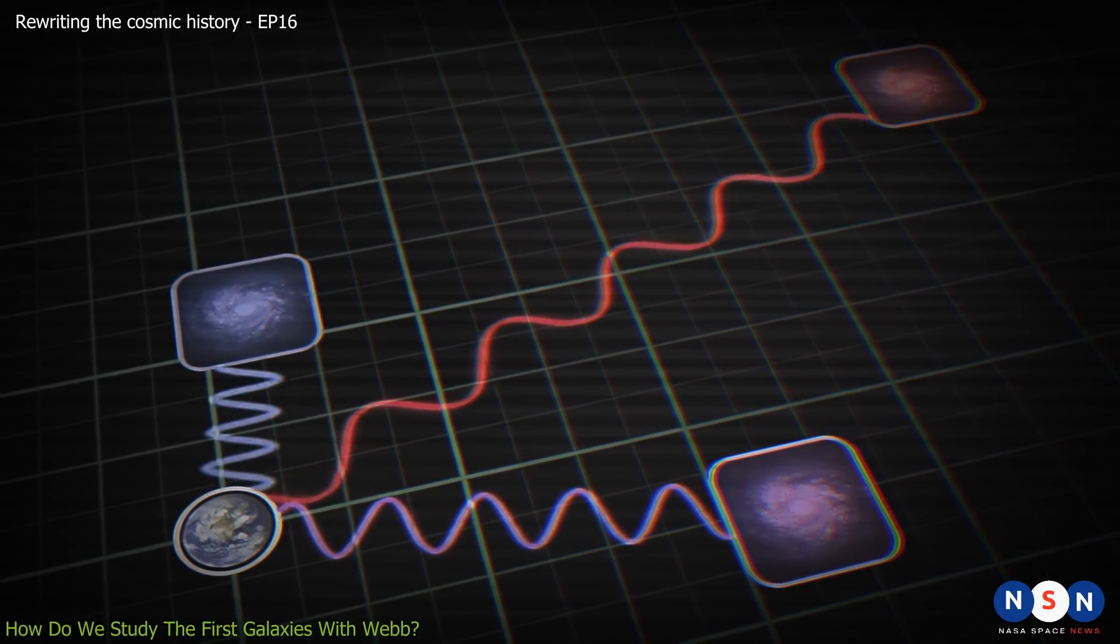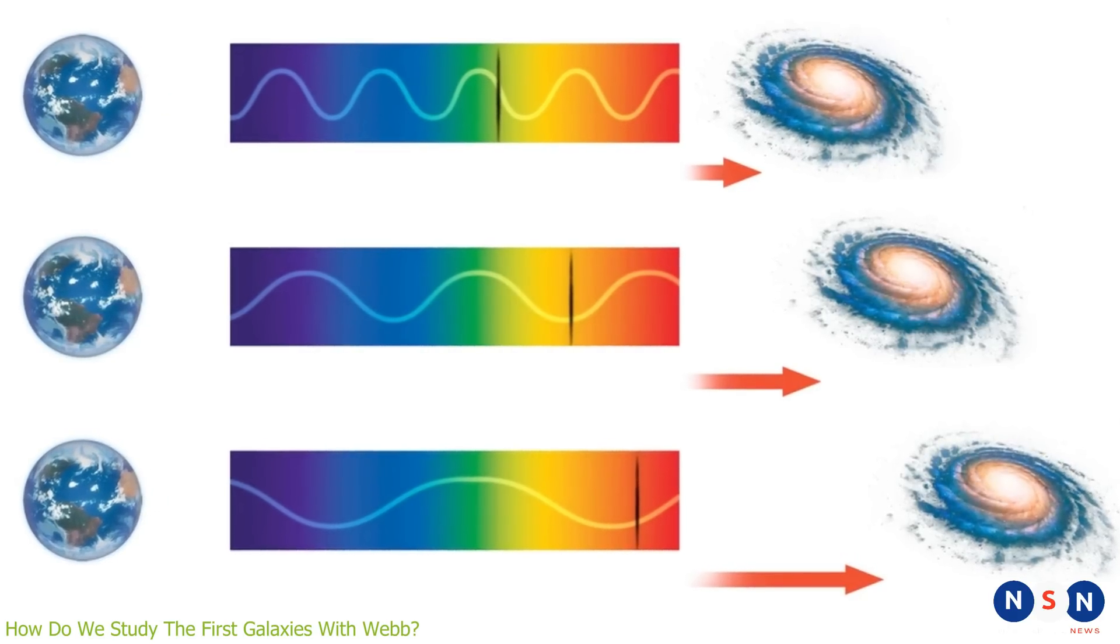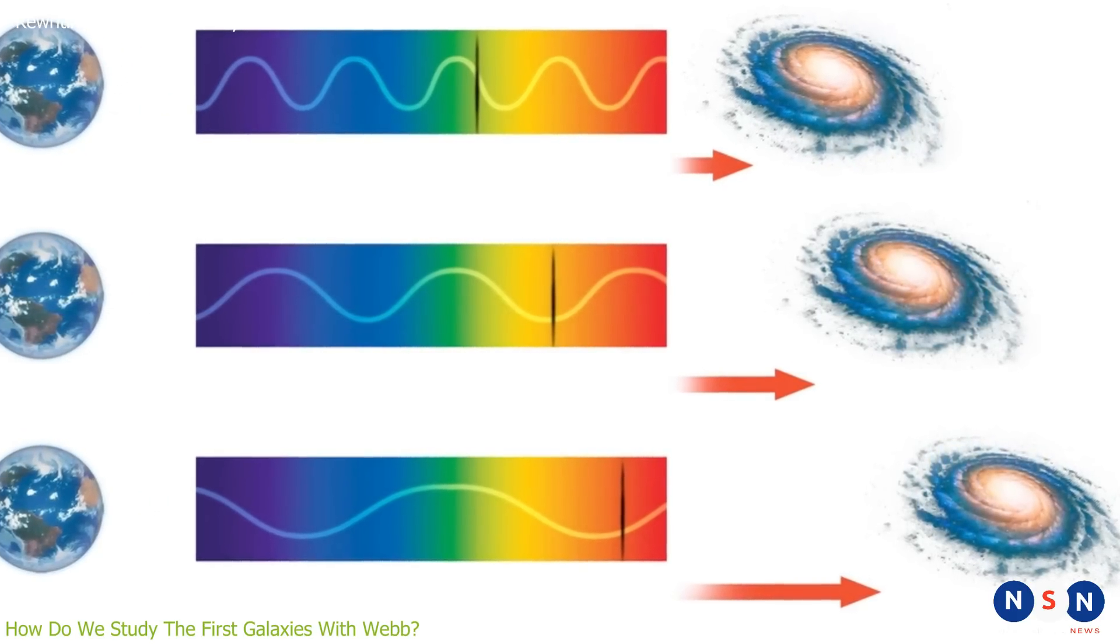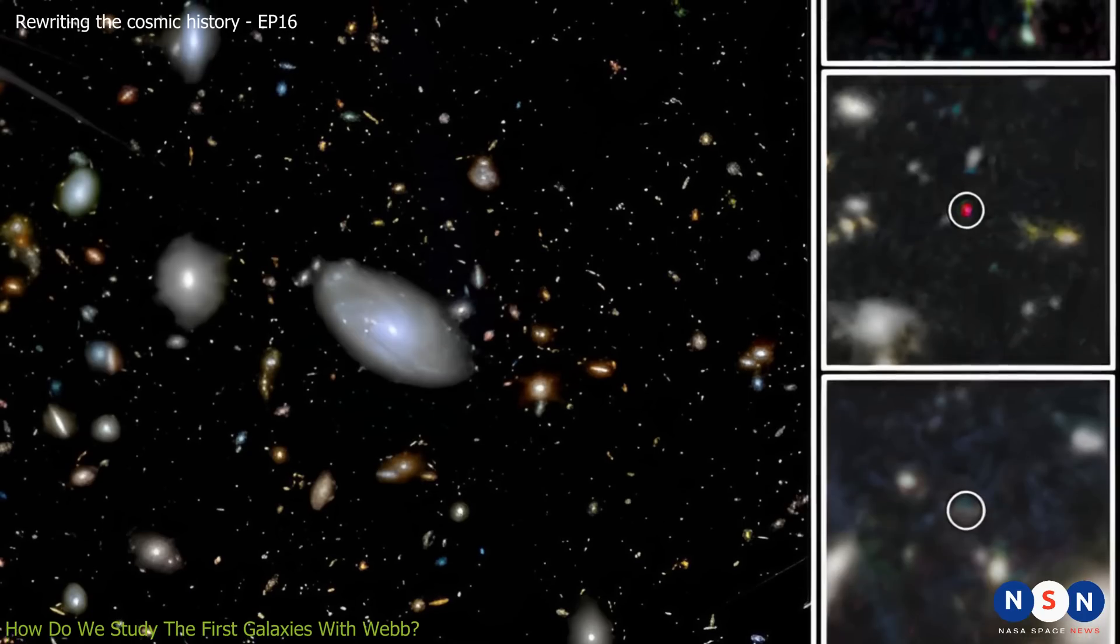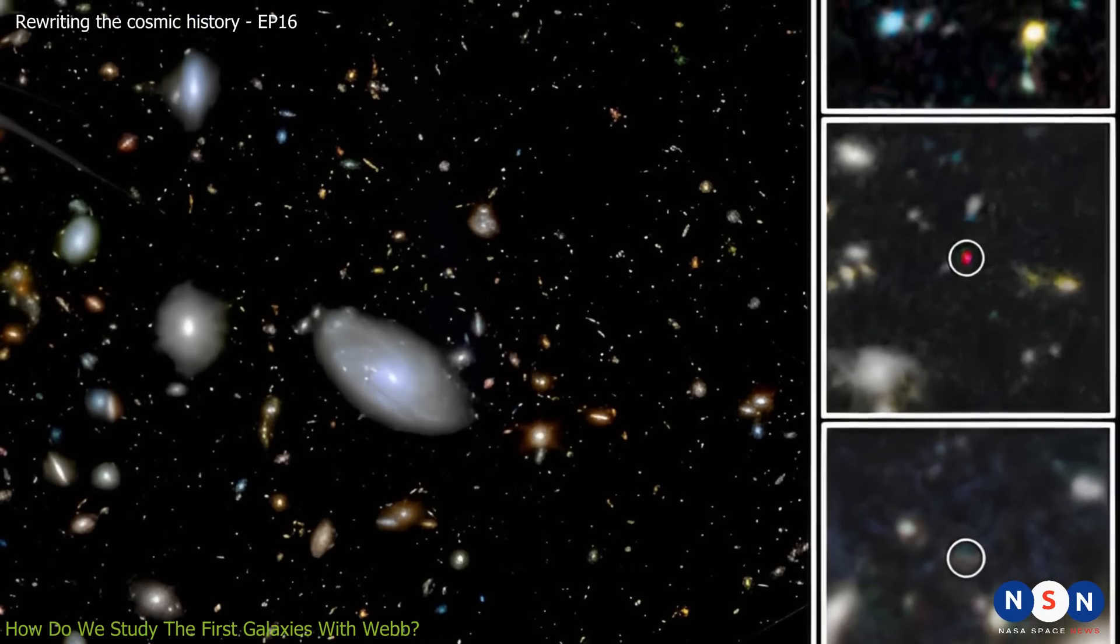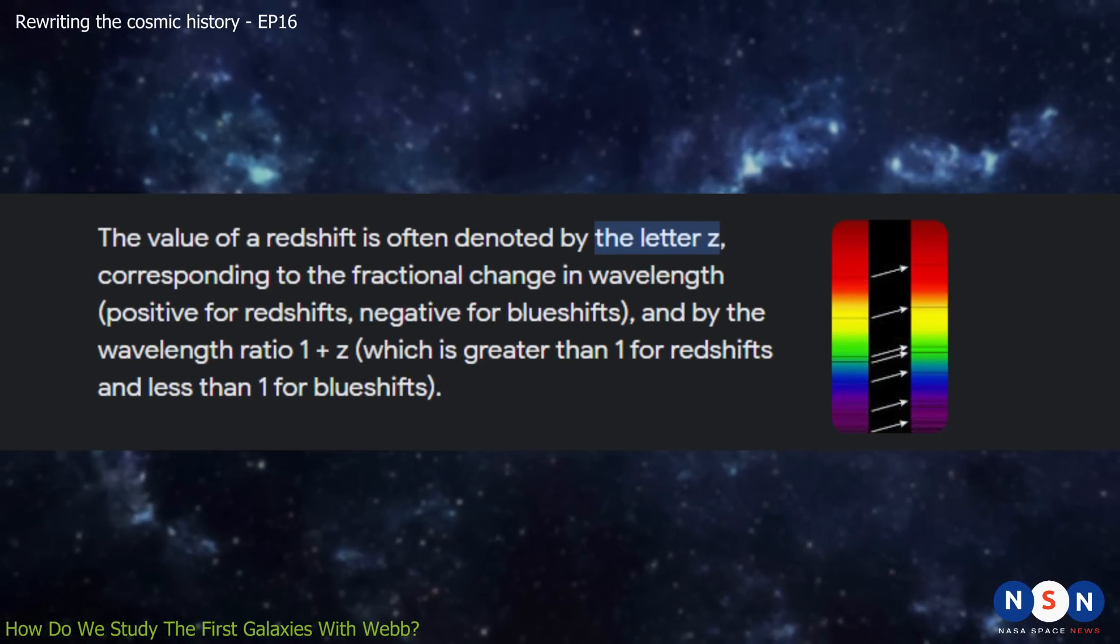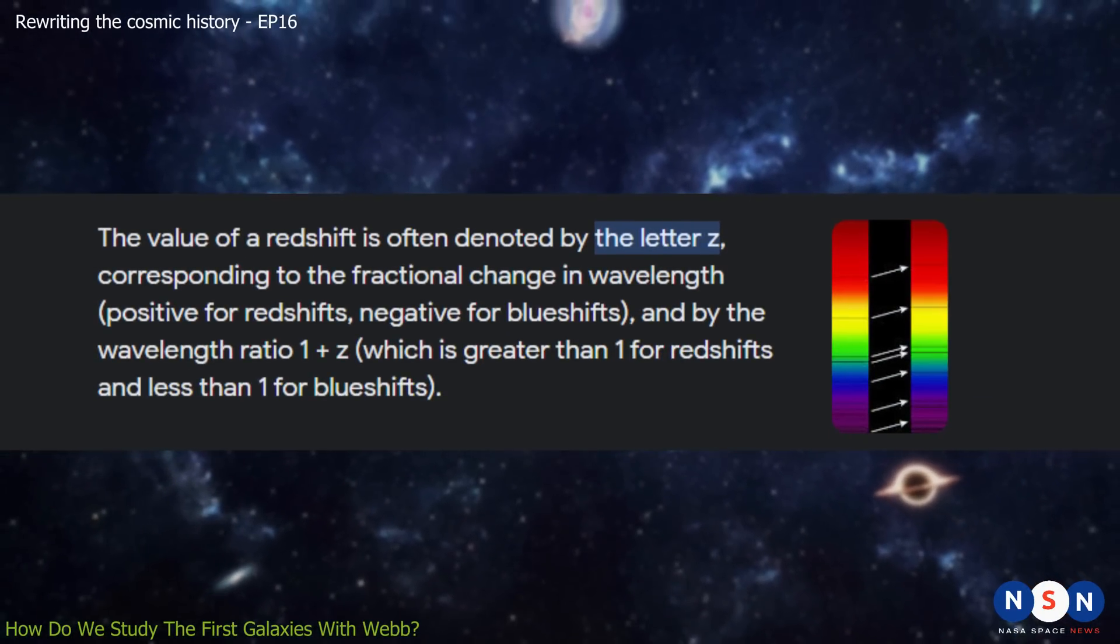The longer the wavelength, the redder the light. By measuring the redshift of a galaxy, we can estimate how far away it is, and how long ago it emitted its light. The higher the redshift, the farther and older the galaxy. The redshift of a galaxy is usually denoted by a letter Z, followed by a number.